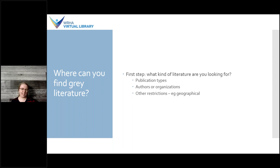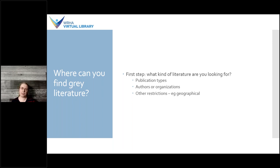When figuring out where to look for grey literature, the first step is to determine what kind of literature you're looking for. That includes what specific publication types are relevant for your topic, and which specific organizations or authors you're interested in. If you're only interested in what the Canadian Medical Association has to say, you're better off going directly to their website rather than doing a broad grey literature search. You also want to think about other restrictions such as geography — for example, if you're only interested in Canadian policy examples, that will guide where and how you search.